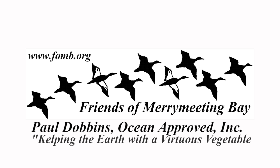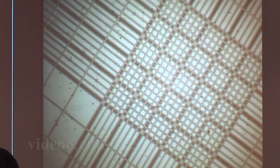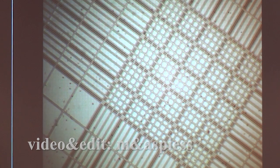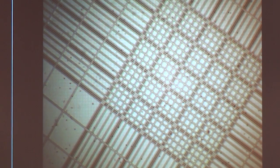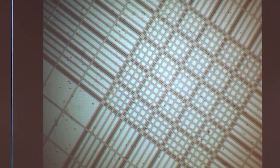They're magnified about 500 times right there, and they're on a grid on a microscope slide. That's a hemocytometer. We use that to calculate or estimate the number of spores per milliliter, and that's important when we go to create the sporophytes — the small baby kelp plants in our nursery when we start to farm.